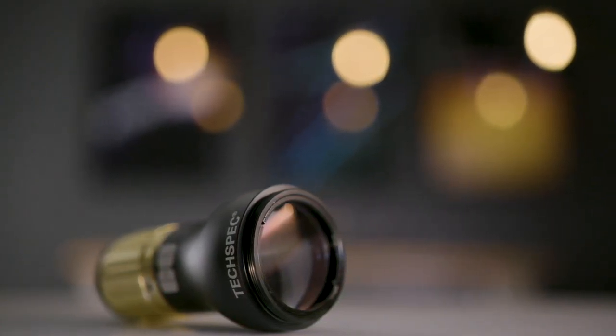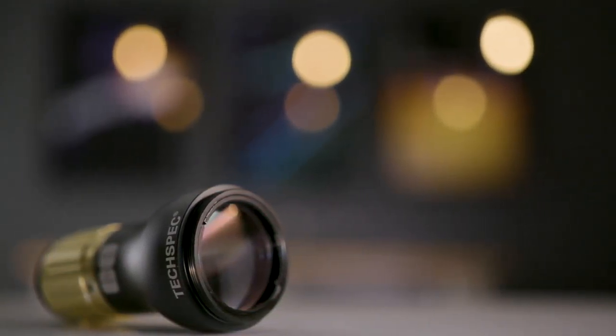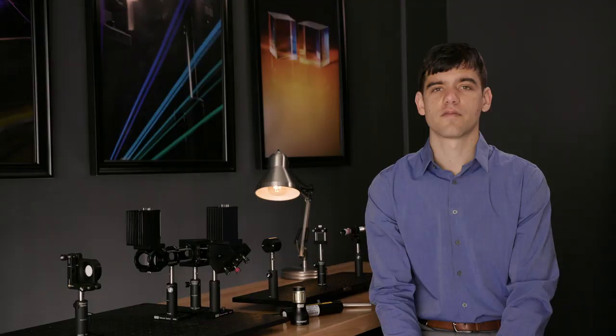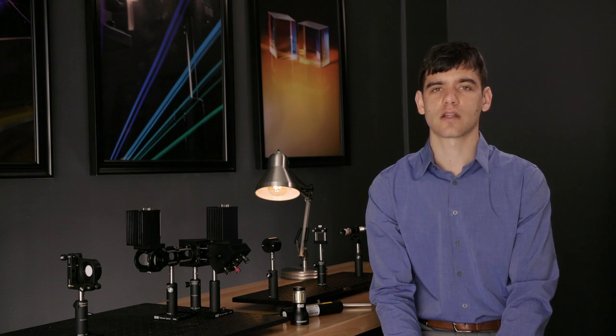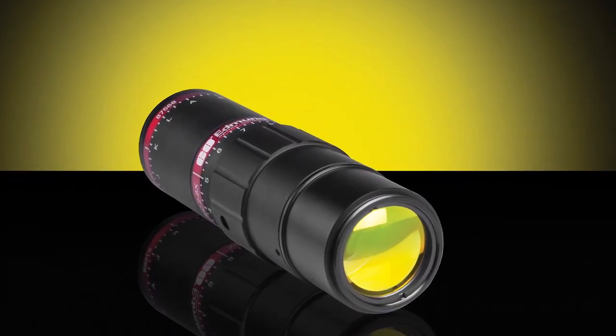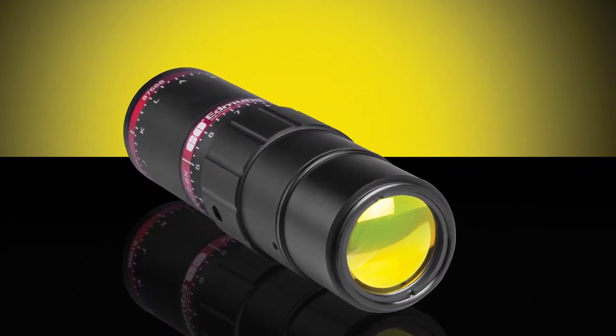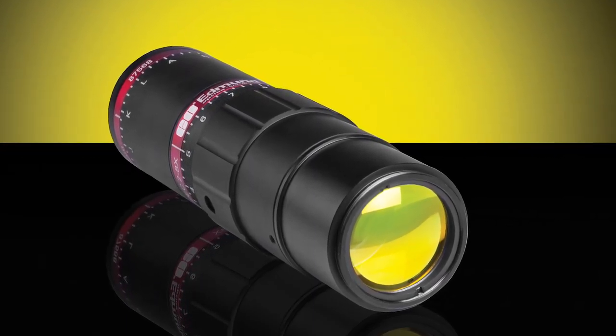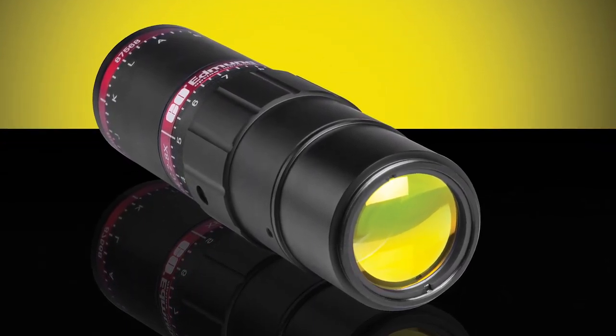Fixed and variable magnification beam expanders achieve the goal of expanding a beam in two different ways. Fixed magnification beam expanders do not allow for a change in magnification. However, they can adjust for divergence, whereas variable magnification beam expanders allow us to reposition the internal lens components to various positions, giving you the ability to change magnification.